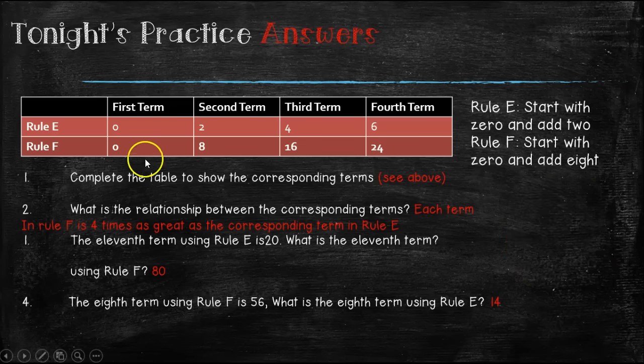Here are our answers. It says the first thing says to complete the table to show the corresponding terms. Rule E says to start with zero, so we filled in zero, and add two as we go across. So zero plus two is two, plus two is four, plus two is six. Then rule F was to start with zero, which we did in the first term, and add eight. Zero plus eight is eight. Eight plus eight is 16. 16 plus eight is 24.